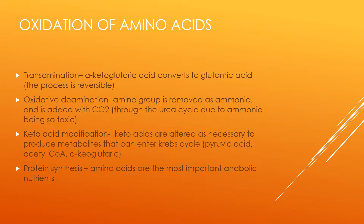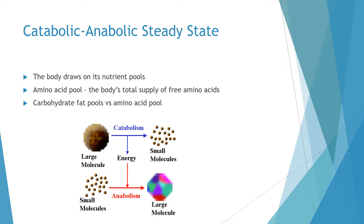Amino acids are the most important anabolic nutrient. The body draws on its nutrient pools — the current stocks of amino acids, carbohydrates, and fats — to meet its varying needs. The amino acid pool is the body's total supply of free amino acids. Fats and carbohydrates are oxidized directly to produce cellular energy, whereas amino acids can also be used to supply energy. Excess carbohydrates and fats can be stored, whereas amino acids are not stored as protein; instead they are oxidized for energy or converted to fat or glycogen for storage.